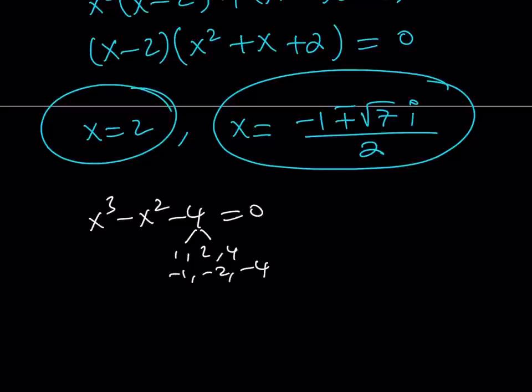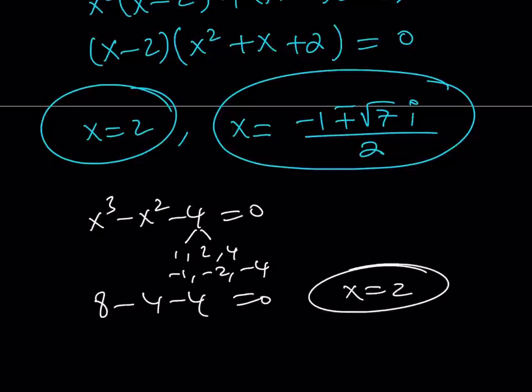And if you test out 2, you're going to notice that 8 - 4 - 4 = 0. So x = 2 is a candidate. It is a solution.